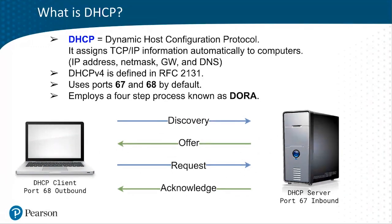How does it know what system is asking for the IP address? Generally, it knows by the MAC address of the DHCP client, and it writes both those pieces of information to the DHCP list. It then acknowledges that the client can now use that IP address, and that TCP/IP configuration is written to the client. Now the client can communicate with other systems on the IP network.